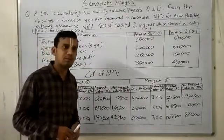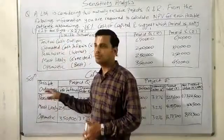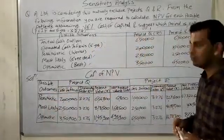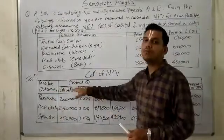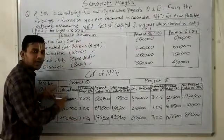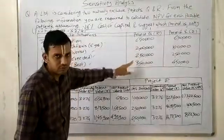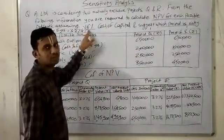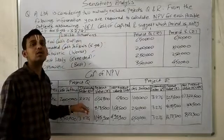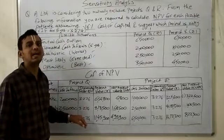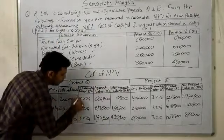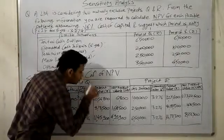We will start with the calculation of NPV. There are three possible outcomes — pessimistic, most likely, and optimistic. We write the three outcomes and divide the table into two equal parts for Project Q and Project R, needing four columns for the easiest calculation. All cash inflows have already been provided. We take the discounting factor at 16% and use the PVIF cumulative value of 3.274 for 5 years. You can refer to the cumulative PV table attached with the video. We then do a simple calculation: cash flows multiplied by the discounting factor gives our present value.